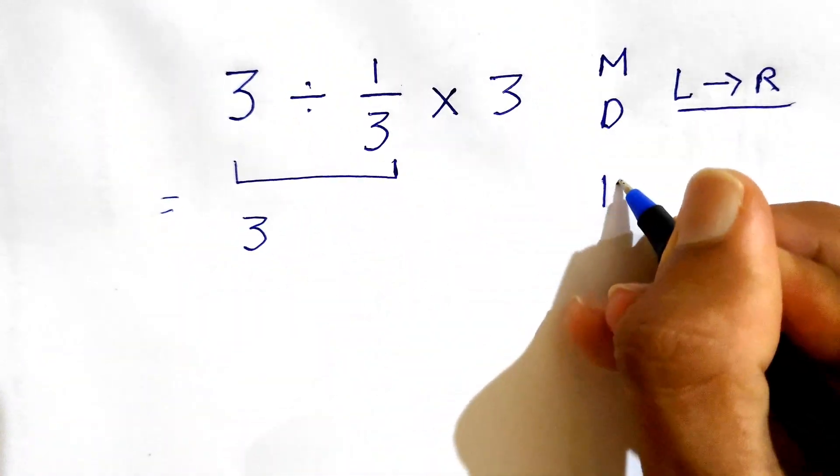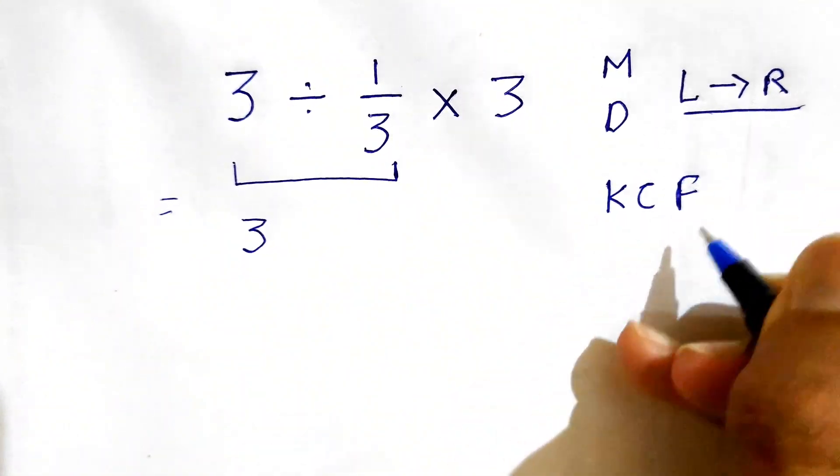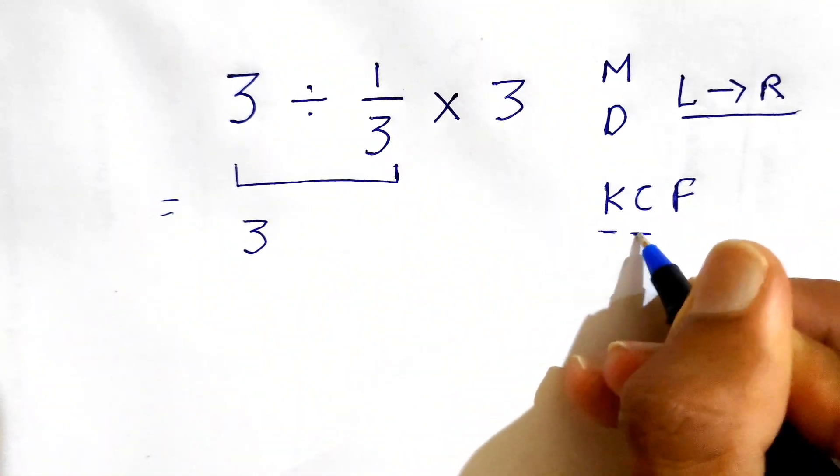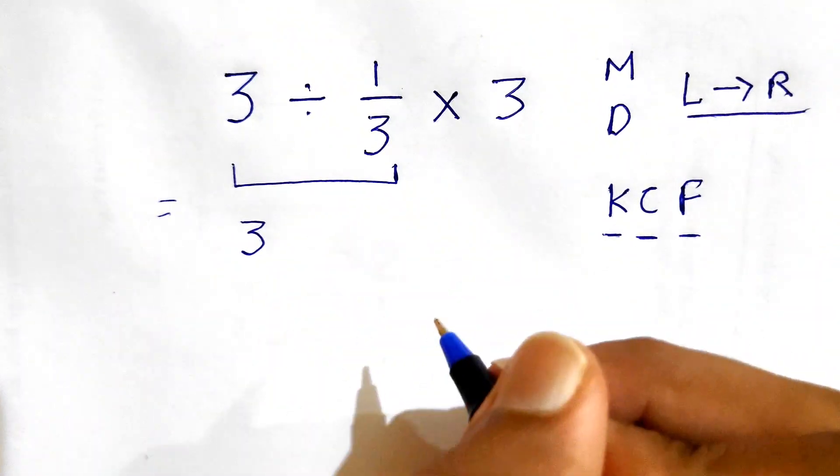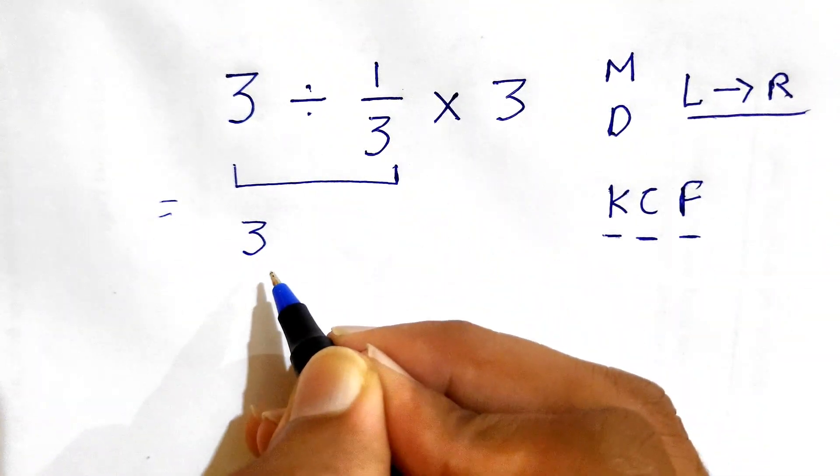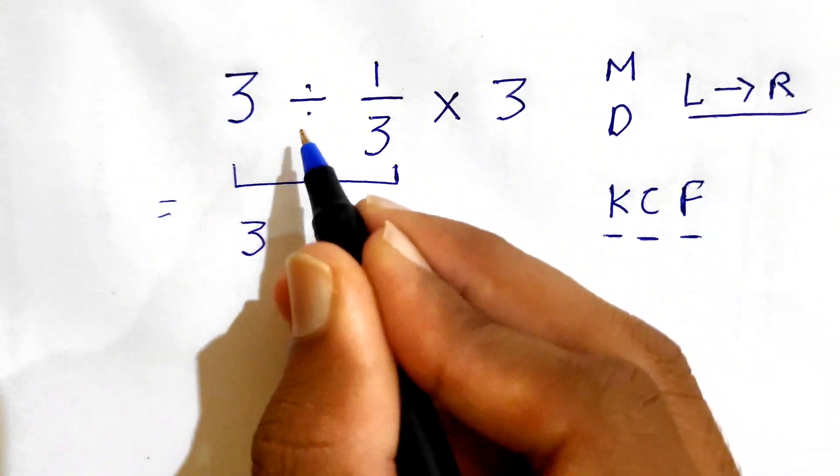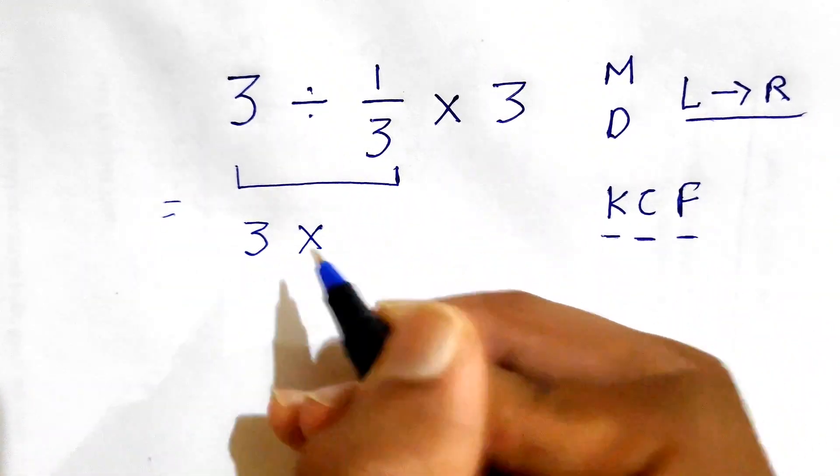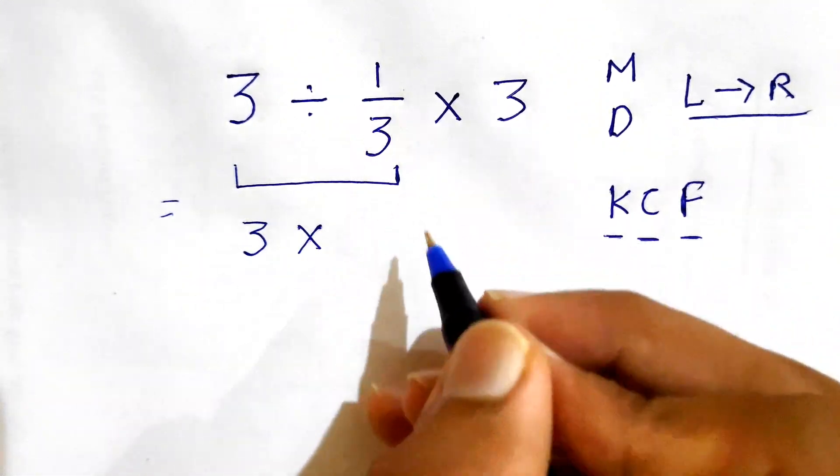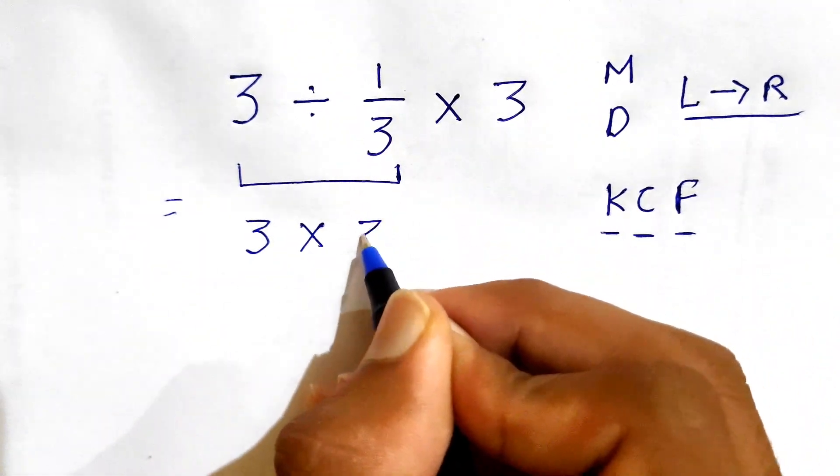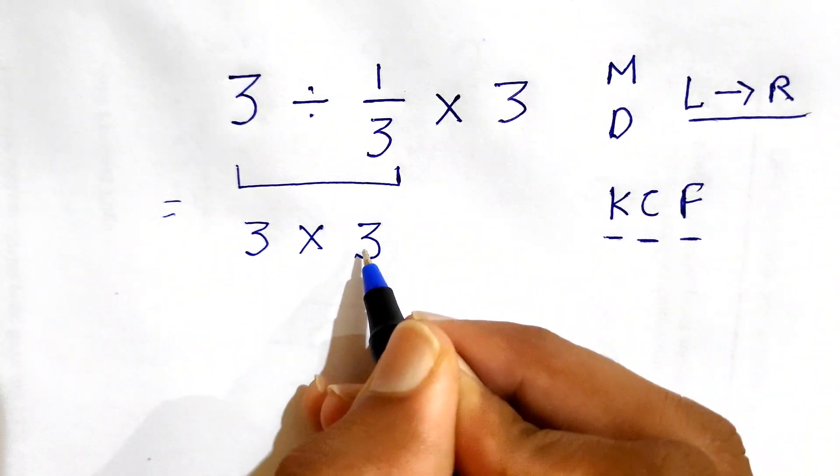KCF stands for keep, change, and flip. In this case, we'll keep this 3 as it is, we'll change this division into multiplication, and we'll flip this 1 over 3, which gives us simply 3.